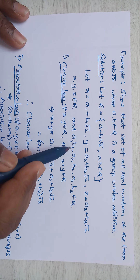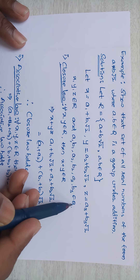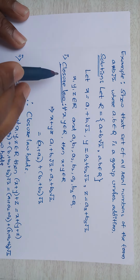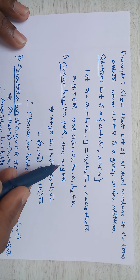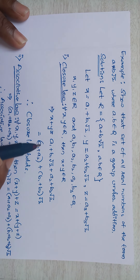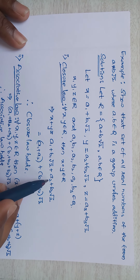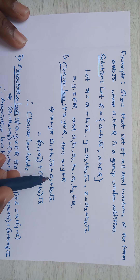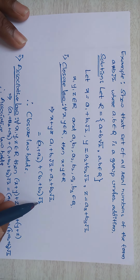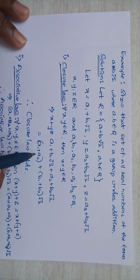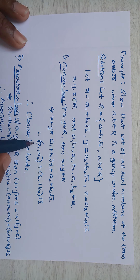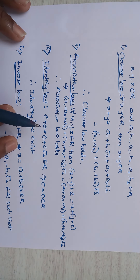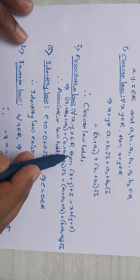Here a1, b1, a2, b2, a3, b3 ∈ ℚ (rationals). Closure law: for all x, y ∈ R, then x + y ∈ R. Here x + y = (a1 + b1√2) + (a2 + b2√2) = (a1 + a2) + (b1 + b2)√2. Since a1, a2, b1, b2 are rationals, the result belongs to R. Therefore closure law holds.